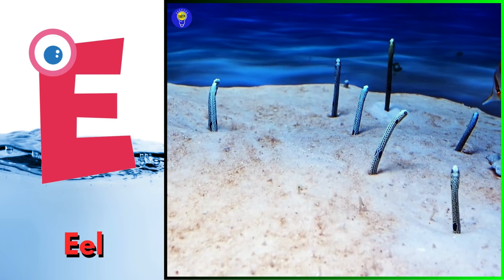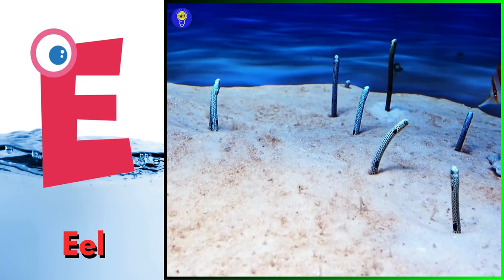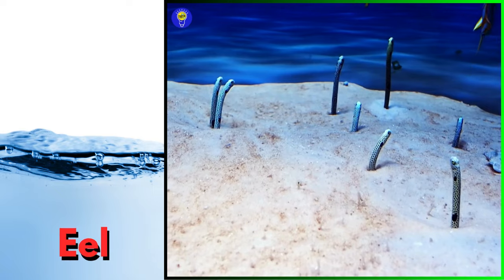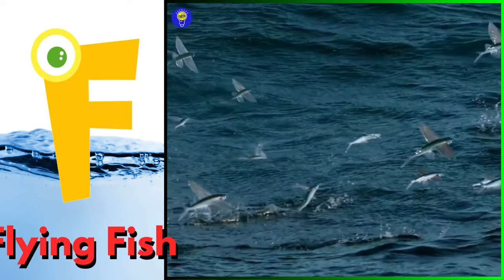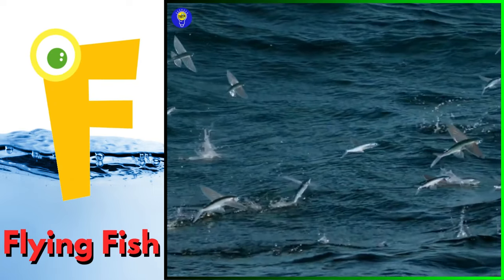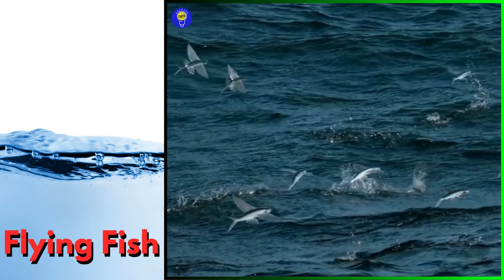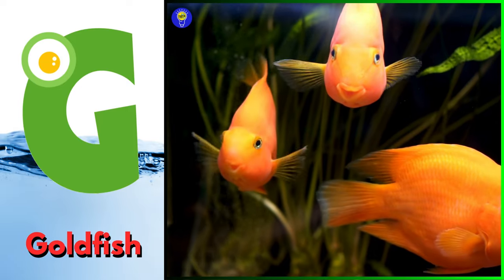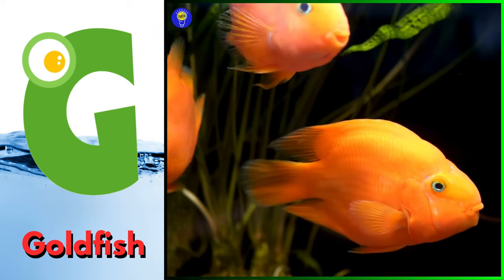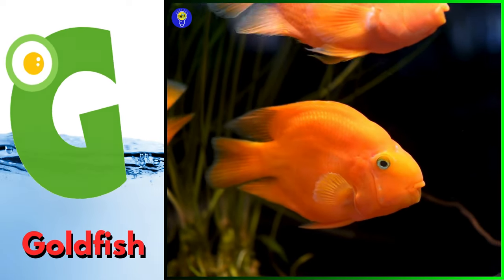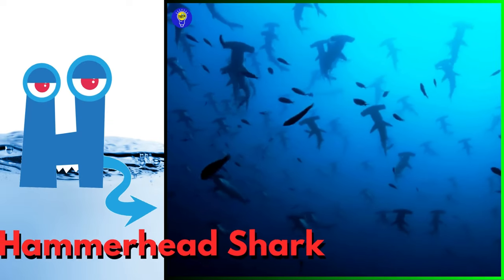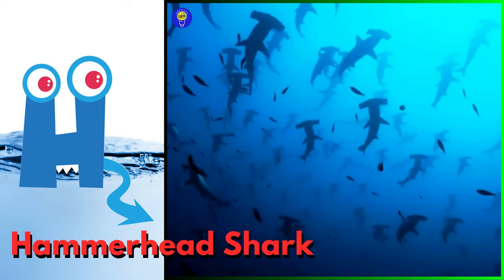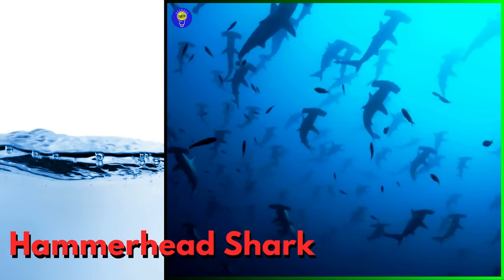E is for eel, eh eh, eel. F is for flying fish, fuh fuh, flying fish. G is for goldfish, guh guh, goldfish. H is for hammerhead shark, ha ha, hammerhead shark.